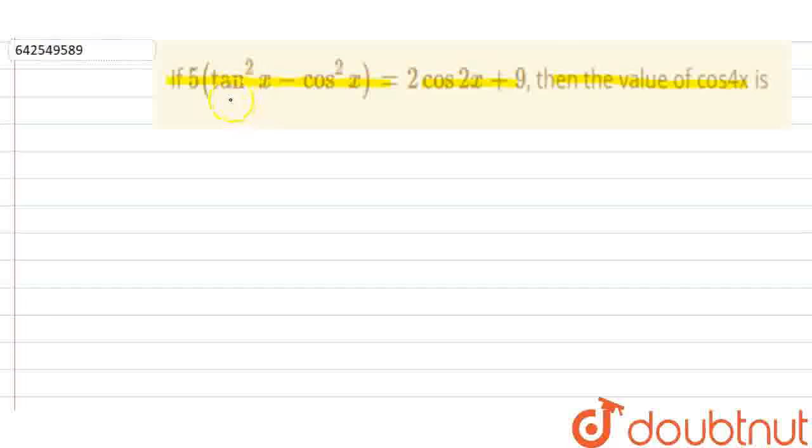Now change everything in cos terms. So this will go to 5. We know 1 plus tan square x is equal to sec square x. Then tan square x will be sec square x minus 1. So this will be sec square x minus 1 minus cos square x is equal to 2. Now cos 2x can be written as 2 cos square x minus 1 plus 9.